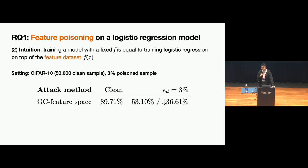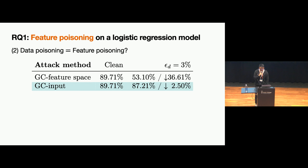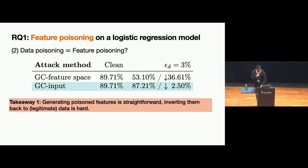However, feature poisoning is simply not possible in practice — it's never possible to inject features directly; you still have to do it through input data. This leads to our second problem: whether data poisoning equals feature poisoning. When we deploy the GC input space attack, the attack performance drops dramatically from 36% to only 2.5%, indicating that data poisoning is not equal to feature poisoning. The takeaway is that generating poison features is extremely easy, but inverting them back to the data space is extremely hard with existing attacks, so we must explicitly invert them back.